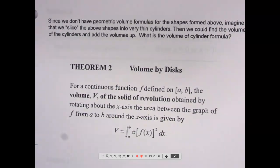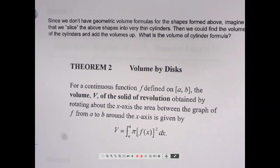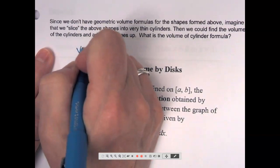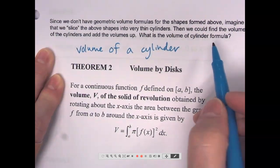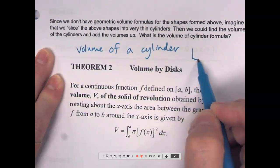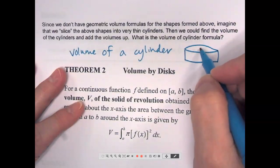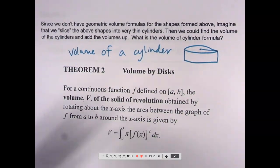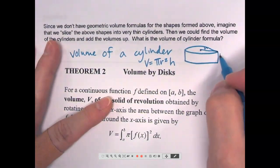So since we don't have geometric volume formulas for the shapes formed above or on the previous page, imagine that we slice the above shapes into very thin cylinders. Then we could find the volume of the cylinders and add the volumes up. What is the volume of a cylinder formula? And then I'll show you what I mean about the slicing idea. How do we find volume of a cylinder? It's area of the base. Well, the base is a circle in a cylinder. So area of a circle is pi r squared, and then times the height. So volume equals pi r squared h.